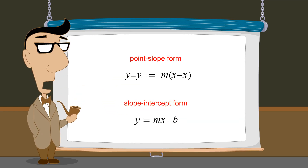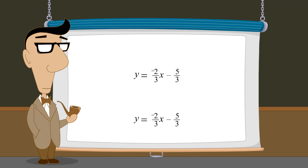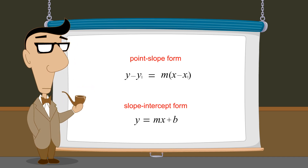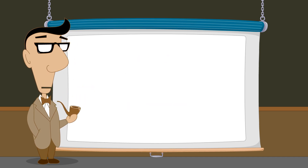So although the point-slope and slope-intercept forms look different, once the proper constant values are assigned, the two equations express the same relation between x and y and are therefore equivalent. However, either form may be more convenient depending upon the information we know about the line. In the next lecture, we will introduce an additional form of the equation for a line, known as the two-point form.